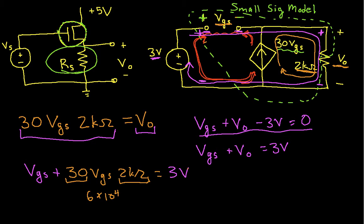Okay, so I can then simplify this. I can factor out this VGS. In fact, let's do this now in a different color. I can factor this VGS and this VGS out. So I have VGS times 1, that's the coefficient in front of this guy, plus 6 times 10 to the 4th, is equal to 3 volts.